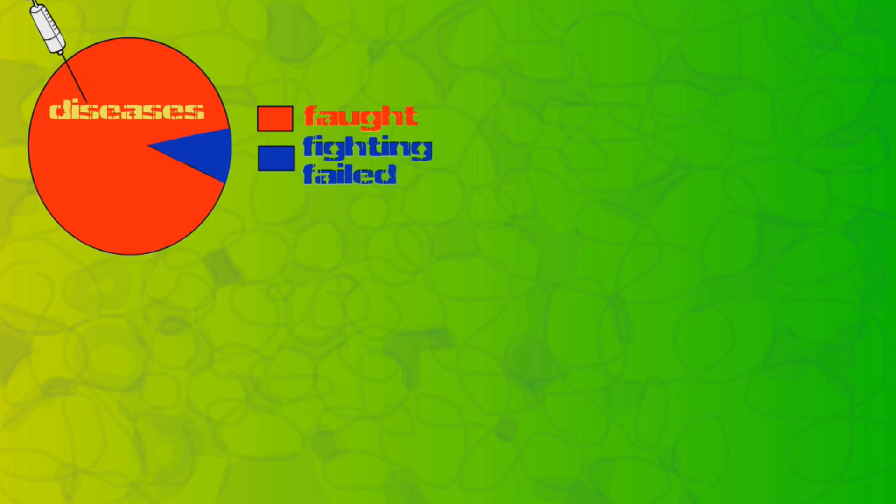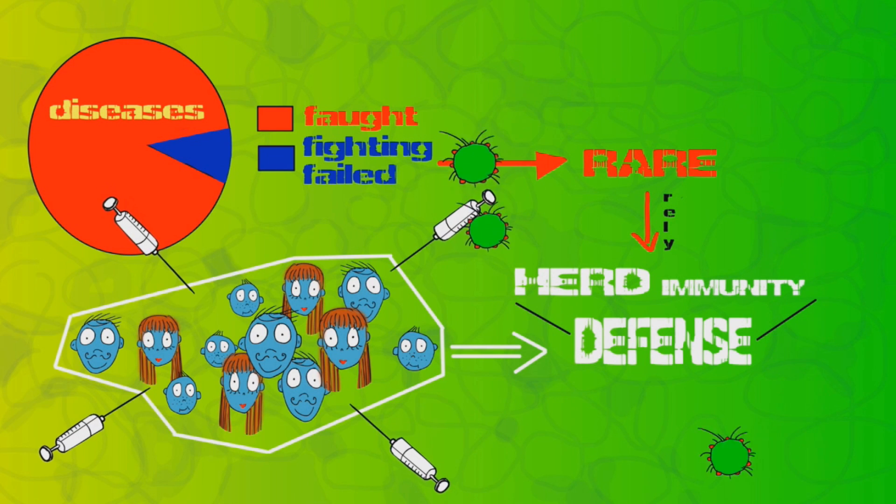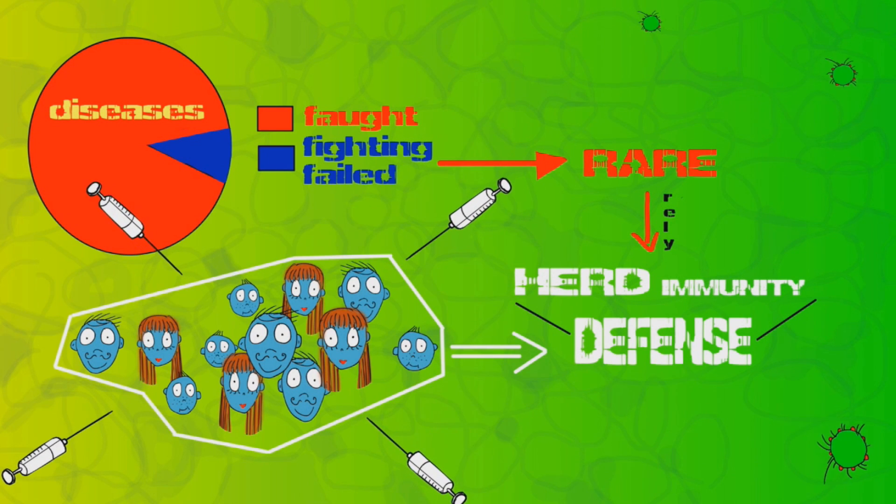Vaccines also do not defend against all the diseases 100%. Though it is rare, you can still get the disease if you are introduced to the pathogen. This is why we rely on herd immunity. Herd immunity is a defense that the population gets if most of the people are vaccinated. Those people will never get the virus, and then it can't spread throughout the population. The pathogen never gets a start in the population in the first place.